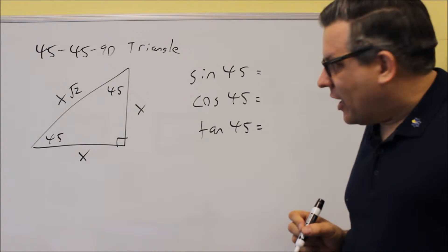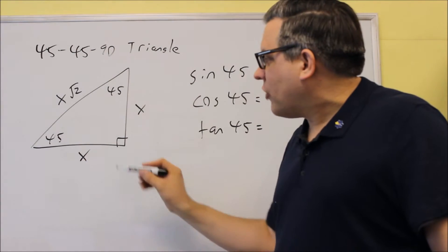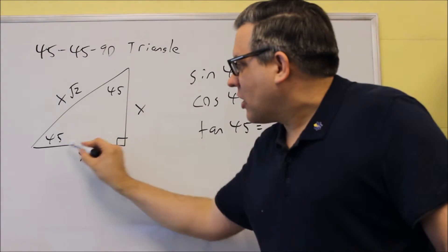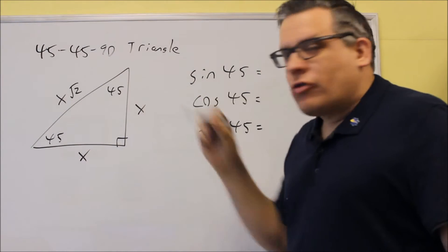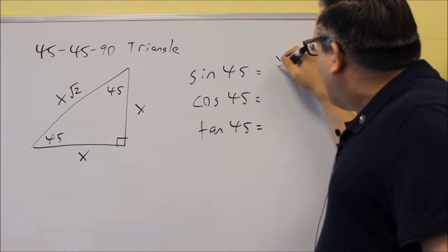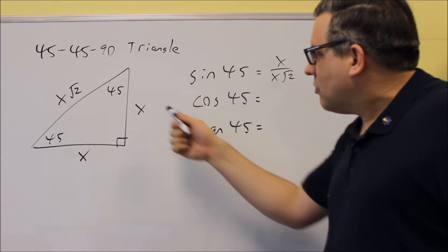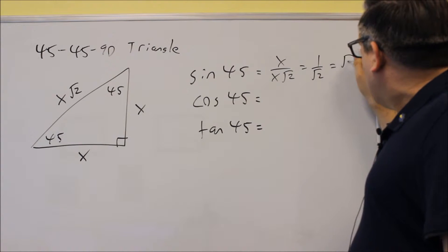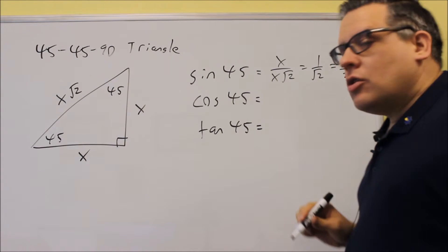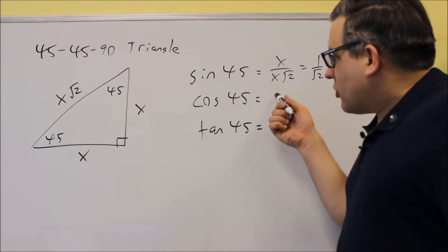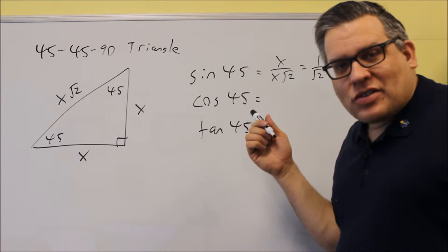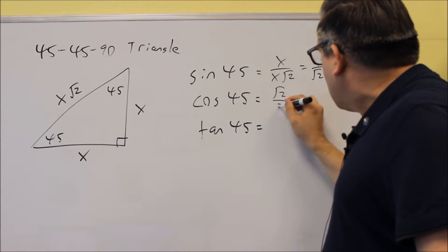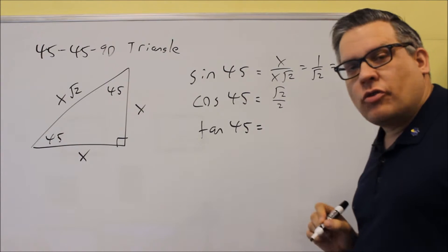For sine 45, since both angles are 45, we can work with either side and get the same answers. Sine equals opposite over hypotenuse: x over x√2. The x's cancel to give 1 over √2, and rationalizing gives √2 over 2. For cosine 45, the adjacent is also x, so x over x√2 gives you the same result — √2 over 2.